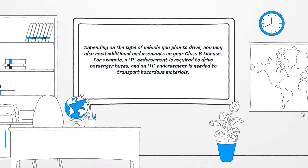Depending on the type of vehicle you plan to drive, you may also need additional endorsements on your Class B license. For example, a P endorsement is required to drive passenger buses, and an H endorsement is needed to transport hazardous materials.